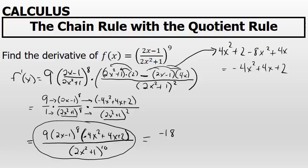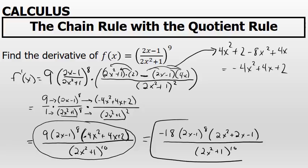That would result in negative 18 times 2x minus 1 to the 8th power times 2x squared minus 2x minus 1, all over 2x squared plus 1 to the 10th power. Either one of the things that are circled on the bottom row would be an acceptable answer. The one on the right is fully factored.